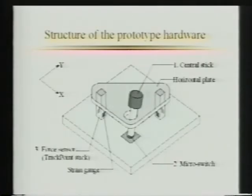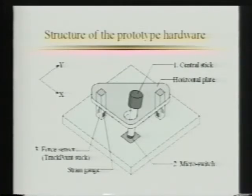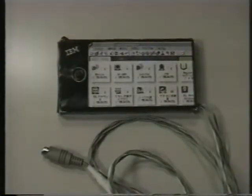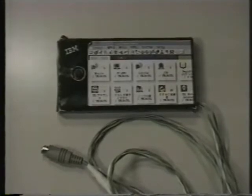NaviPoint hardware consists of a central stick for the user to manipulate, a micro switch under the central stick for the click operation, and force sensors to detect a two-dimensional force exerted in the horizontal plane by the central stick.